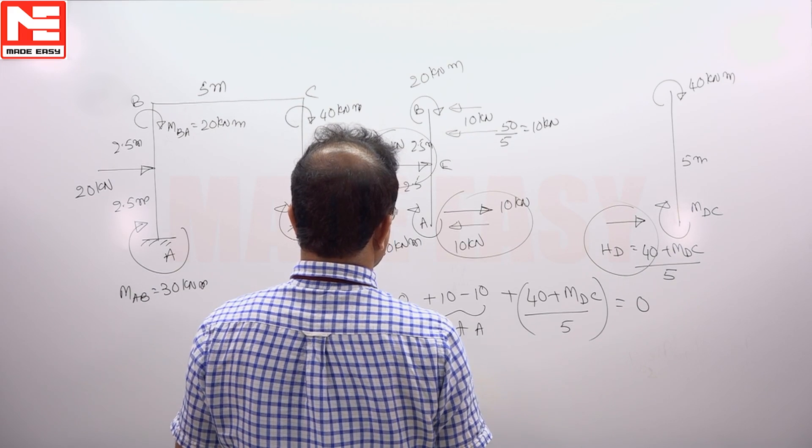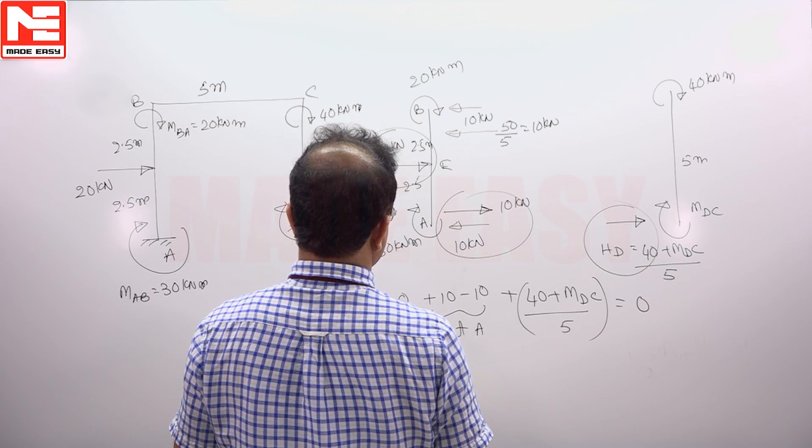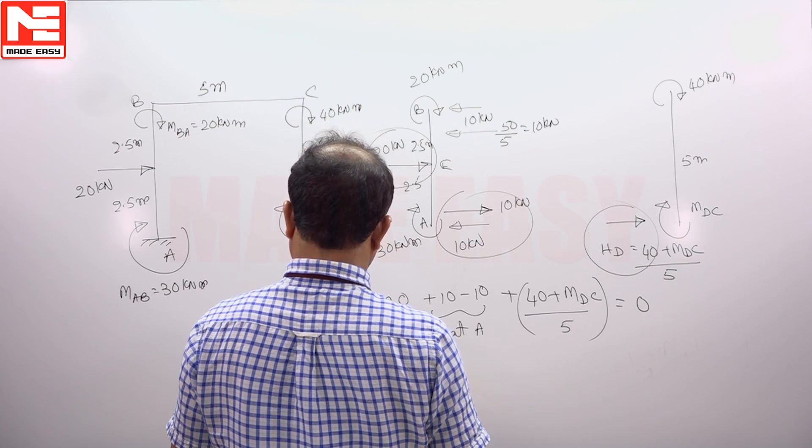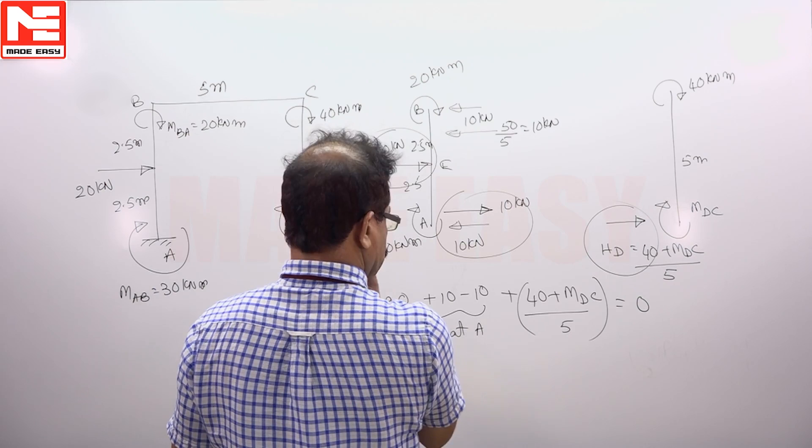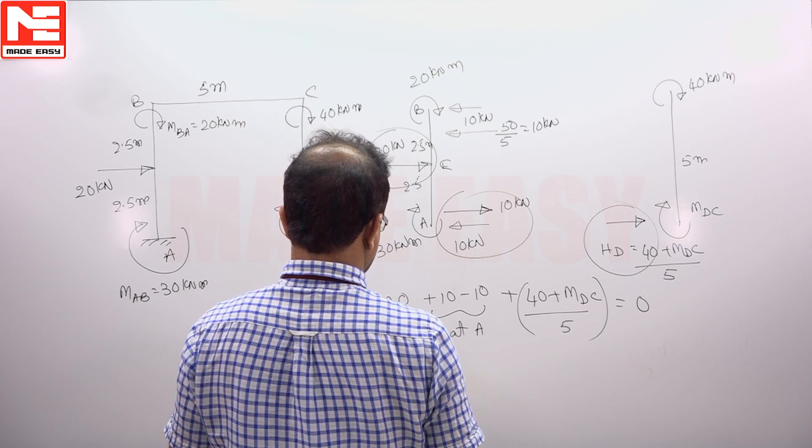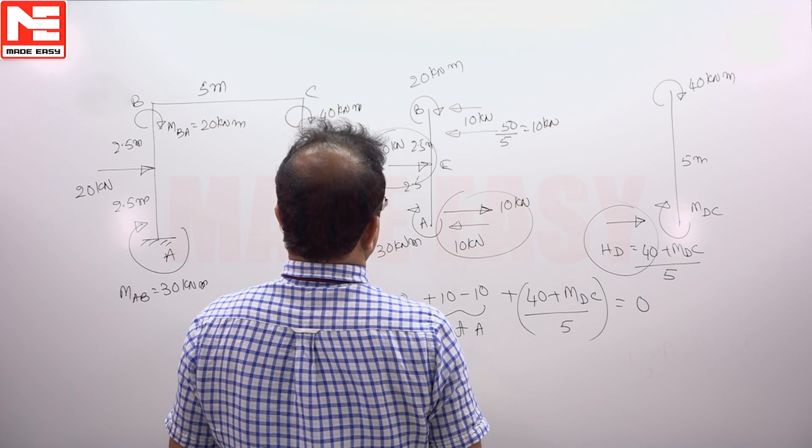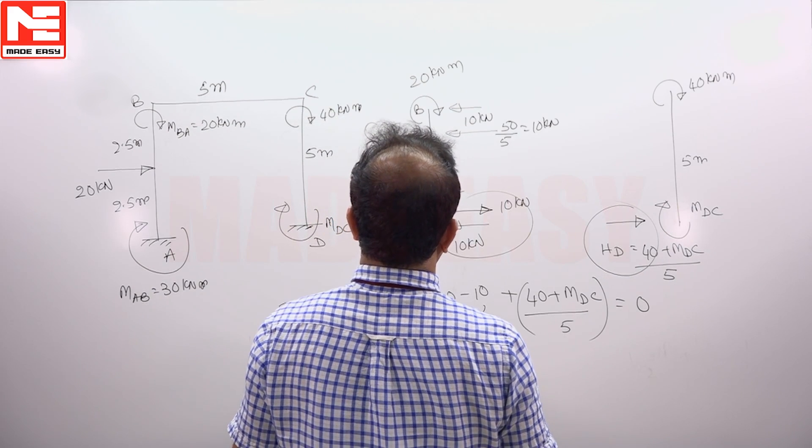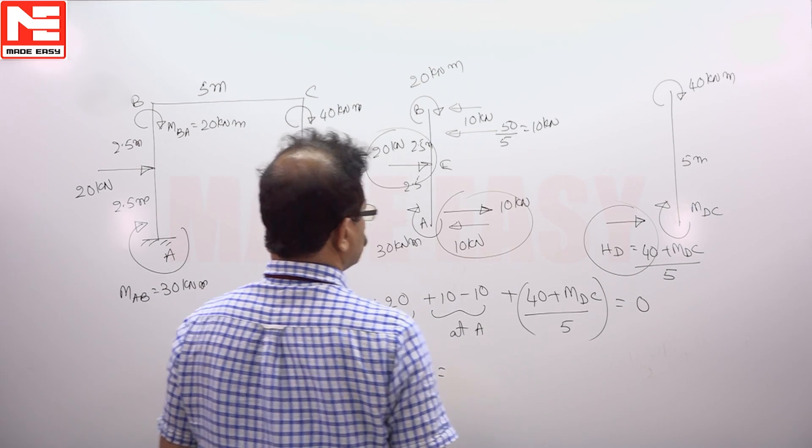Horizontal reaction H_A is 10. So plus 20, 0. 20 means the external reaction is this, 10, 0.